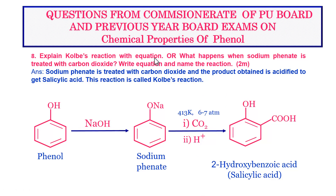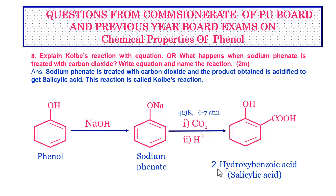Next question: explain the Kolbe reaction with equation. Alternatively, this may be asked as: what happens when sodium phenate is treated with carbon dioxide? Write the equation and name the reaction. This is a two-mark question. Phenol is treated with NaOH to give sodium phenate; CO2 is passed through sodium phenate at 413 Kelvin under 6–7 atmospheric pressure, and the product is acidified to obtain salicylic acid (IUPAC name: 2-hydroxybenzoic acid). This reaction is called the Kolbe reaction.